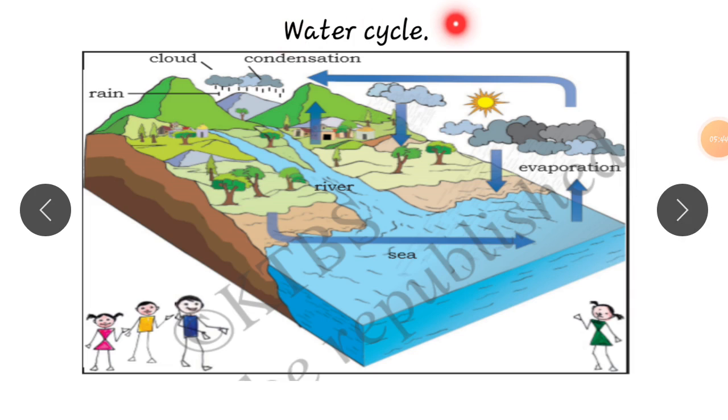Water cycle. Children, water cycle is a continuous process. Observe here, it is a continuous process. The water cycle shows the continuous movement of water, children, from earth to atmosphere.